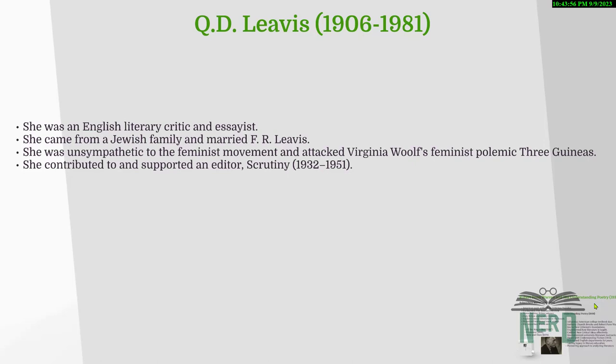Next we have Q.D. Leavis — an English literary critic and essayist who came from a Jewish family and married F.R. Leavis. She was unsympathetic to the feminist movement and attacked Virginia Woolf's feminist polemic Three Guineas. She is important in literary criticism — particularly New Criticism — because she contributed to and supported the editorial work of Scrutiny.